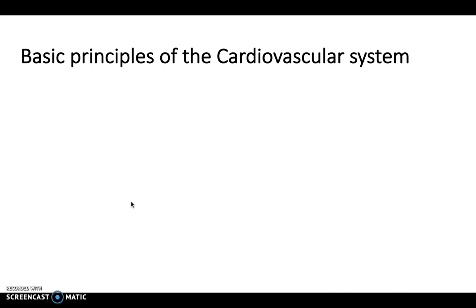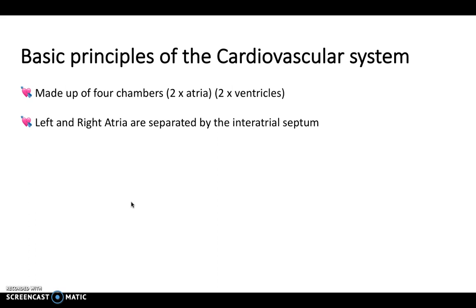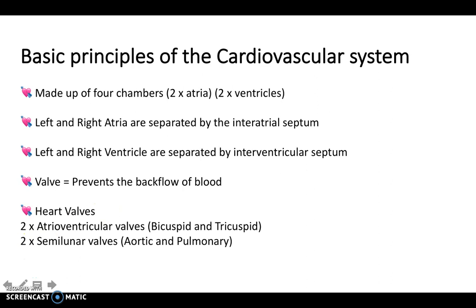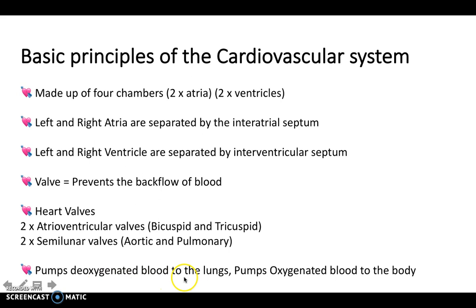The heart is made up of four chambers: two atria at the top and two ventricles below. The left and right atria are separated by the interatrial septum, and likewise the ventricles are separated by an interventricular septum. Valves prevent the back flow of blood and are only present in veins, not in arteries. The heart has two AV valves — the bicuspid with two cusps on the left-hand side and the tricuspid with three cusps on the right — plus two semilunar valves: your aortic and your pulmonary. The overall function of the heart is to pump deoxygenated blood to the lungs and oxygenated blood to the body and our cells.